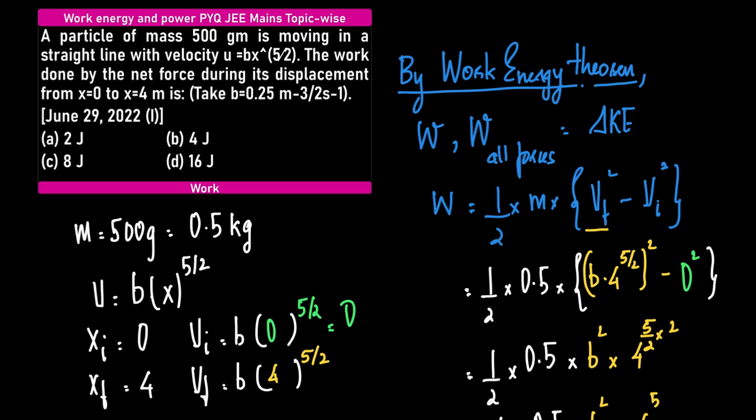Instead of Vf squared, we can substitute b times 4 to the power 5/2, the whole squared, minus Vi squared. We can substitute Vi equals 0, so 0 squared.